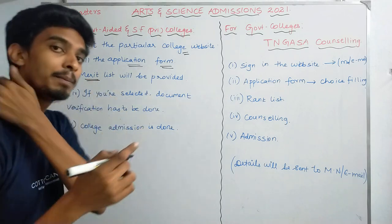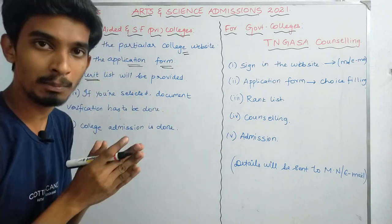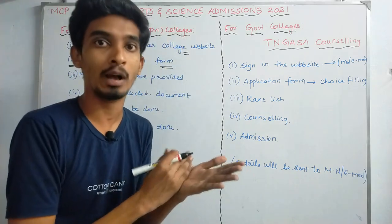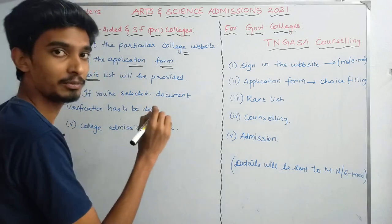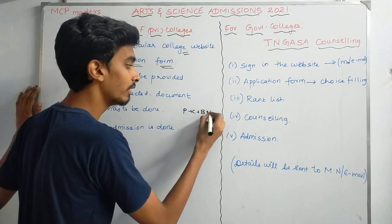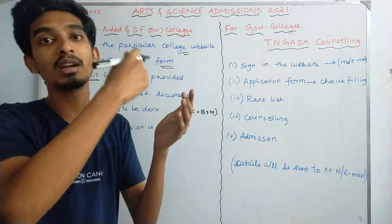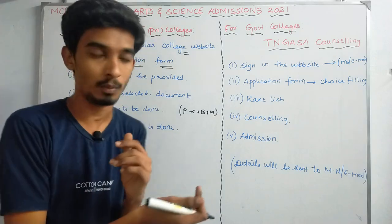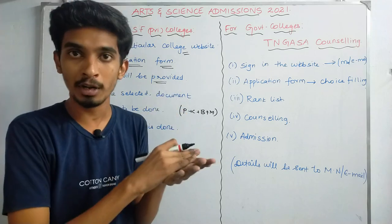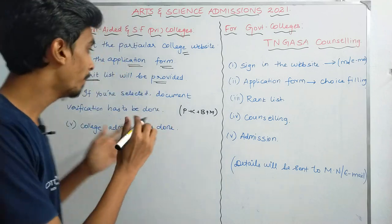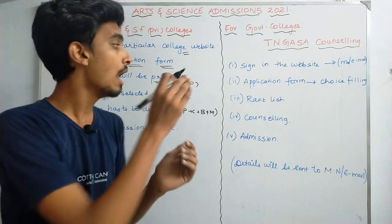Next, you can apply college-wise. For example, you can apply to Loyola College or the American College. If you go to the college, you can apply to the rank list. If you go to the rank list, they will produce a merit list with a cut-off. For example, for Biology — Physics, Chemistry, Biology max — if you apply with those three subjects, you can apply to the rank list and merit list.